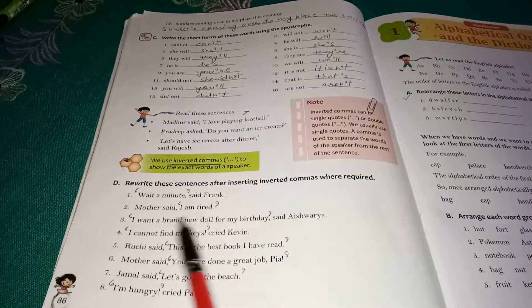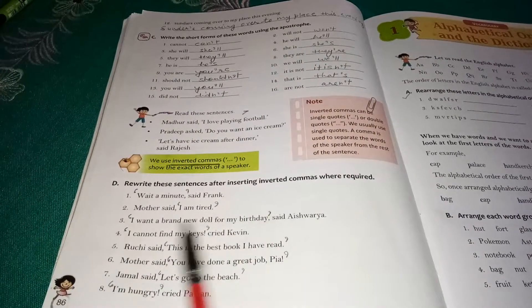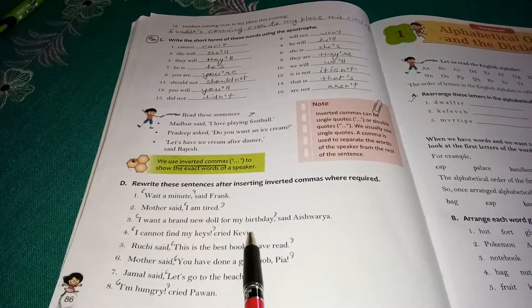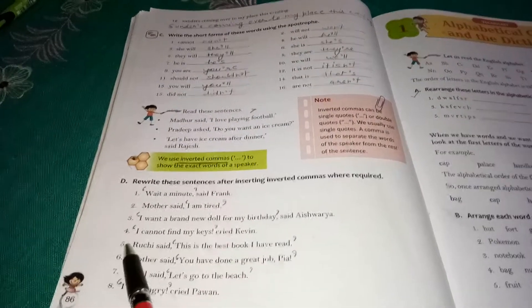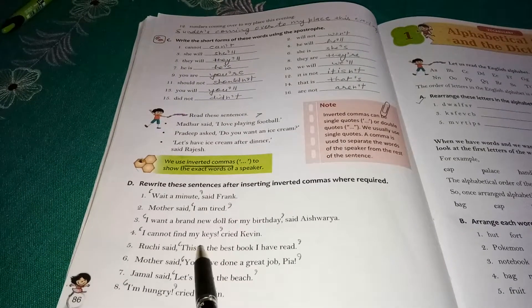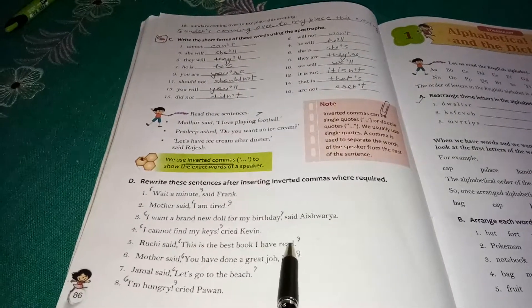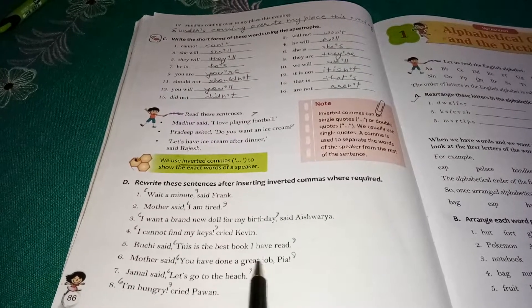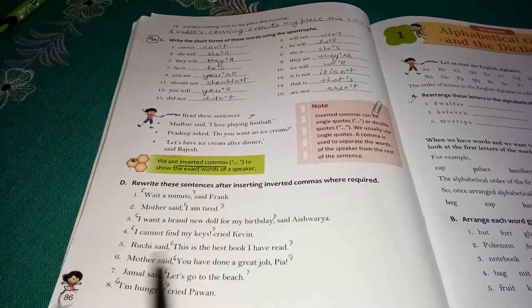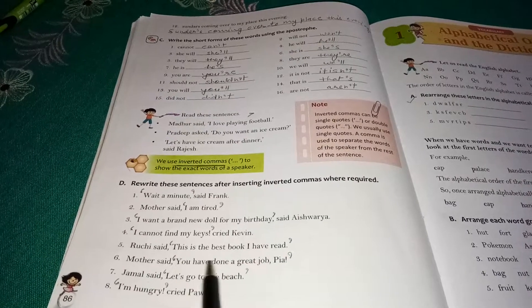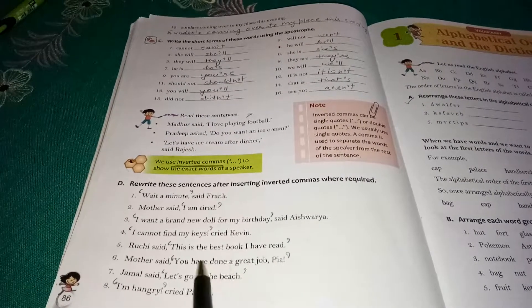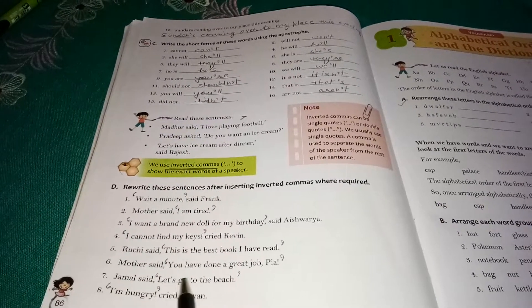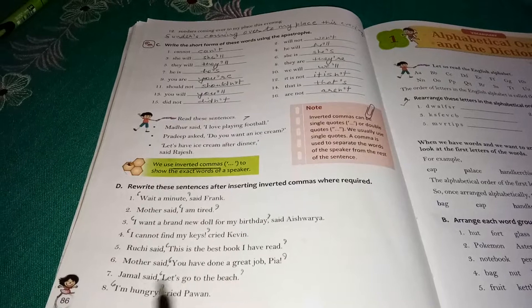"I cannot find my keys," cried Kevin. Number five: Ruchi said, "This is the best book I have read." Mother said, "You have done a great job, Pia." This is mother's dialogue. She is appreciating Pia. It's written in inverted comma.